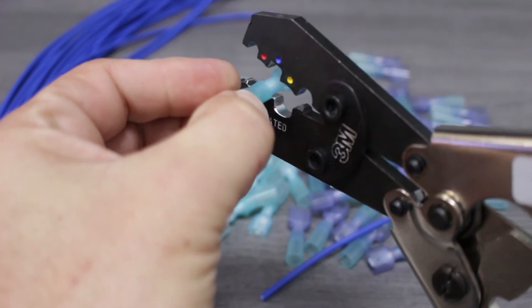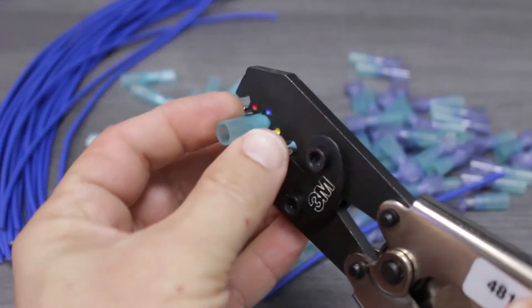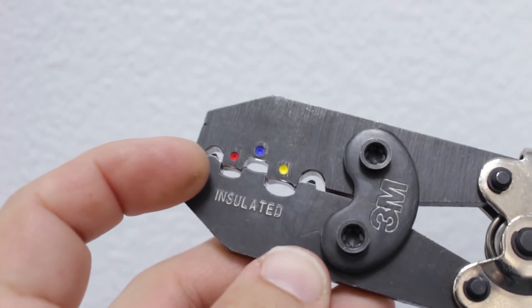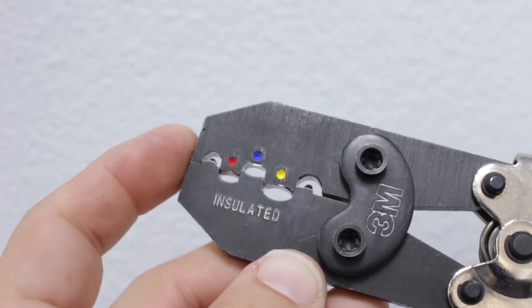With our wires cut and stripped to the correct length, we'll line up the disconnect terminal with the proper crimp nest. You'll notice that this tool offers colored dots at the mouth to make finding the right crimp nest easier.